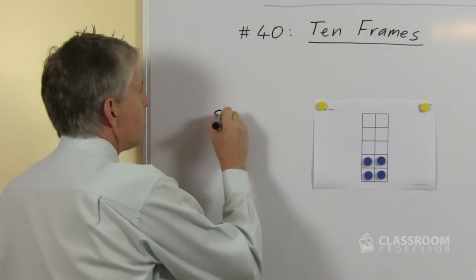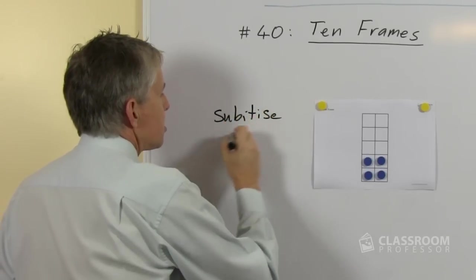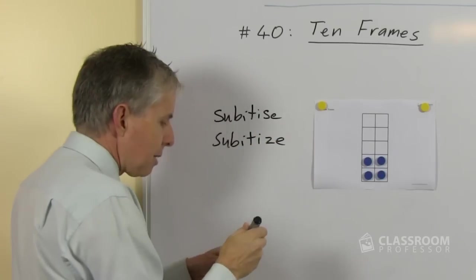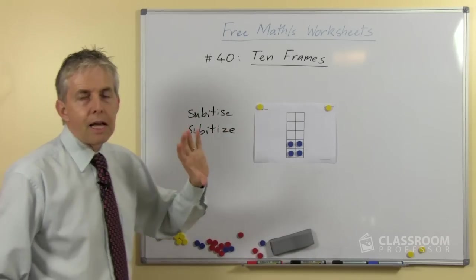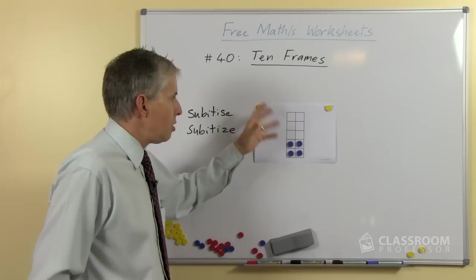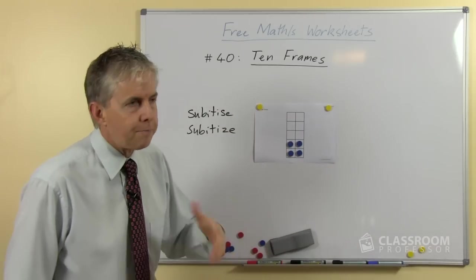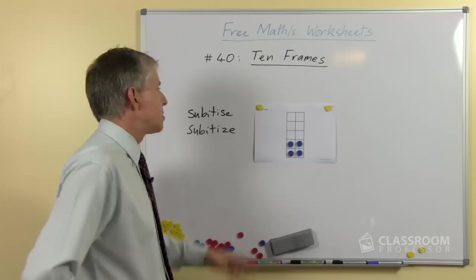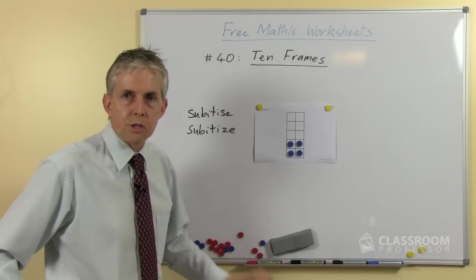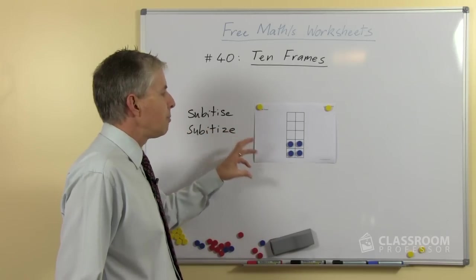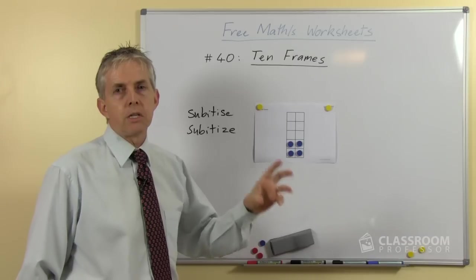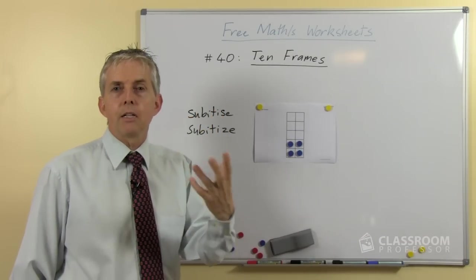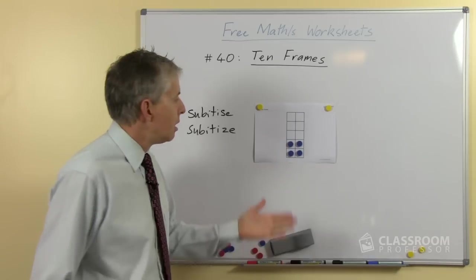And of course the skill that we're developing in our students, and there are two ways to spell it so I better put both of them, is subitizing with an S or a Z. You may remember this from your studies at university because it's not a word you'd use with your students very often. It's the skill of being able to count a group of objects by just looking at them, so it's effectively not really counting, it's recognizing how many there are and just going that's four.